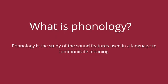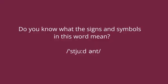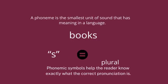Phonology is the study of the sound features used in a language to communicate meaning. In English, these features include phonemes, word stress, sentence stress, and intonation. A phoneme is the smallest unit of sound that has meaning in a language. For example, the 's' in 'books' in English shows that something is plural, so the sound /s/ has meaning. Different languages use a different range of sounds, and not all of them have meaning in other languages.